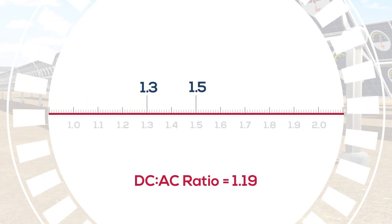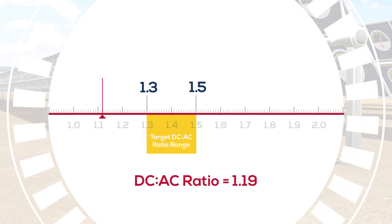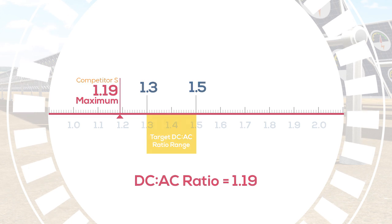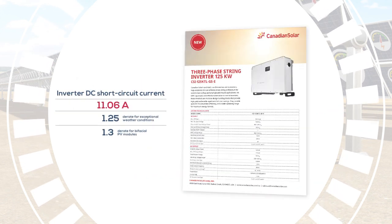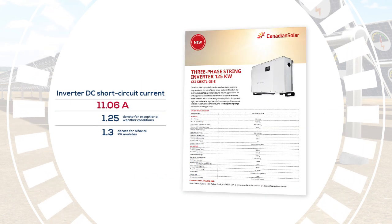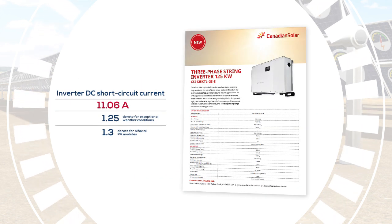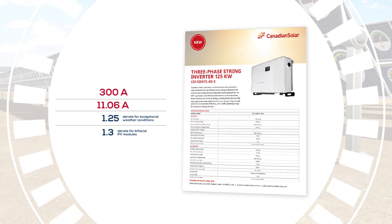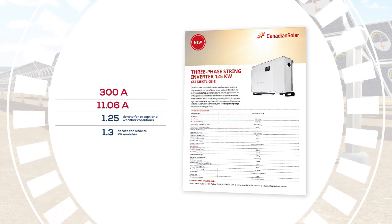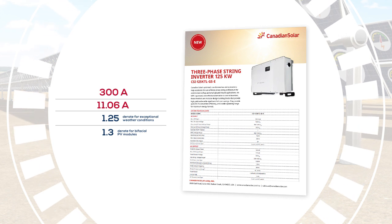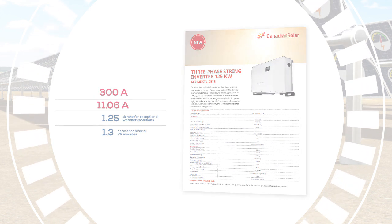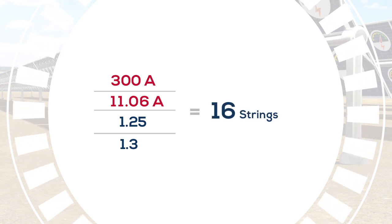That's below the target range of 1.3 to 1.5. Compare that to the same scenario using Canadian Solar's 125-kilowatt inverter, which has a DC short circuit current rating of 300 amps. The number of strings is 300 amps divided by 11.06 amps, divided by 1.25, divided by 1.3, which yields 16 strings maximum.